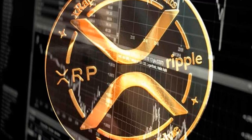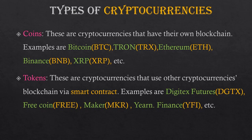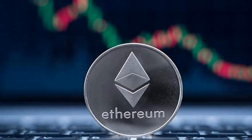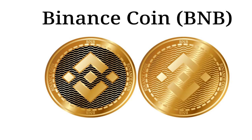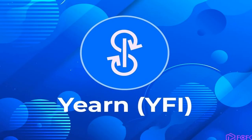We've looked at the forms of cryptocurrencies; now we look at types. Types apply to both stable and unstable. We have coins and tokens. Coins are cryptocurrencies that have their own blockchain. Tokens are cryptocurrencies that use other coins' blockchain. Examples of coins are Bitcoin, Tron, Ethereum, and Binance. Examples of tokens are Digital Futures, Free Coin, Maker, Yen Finance, etc.